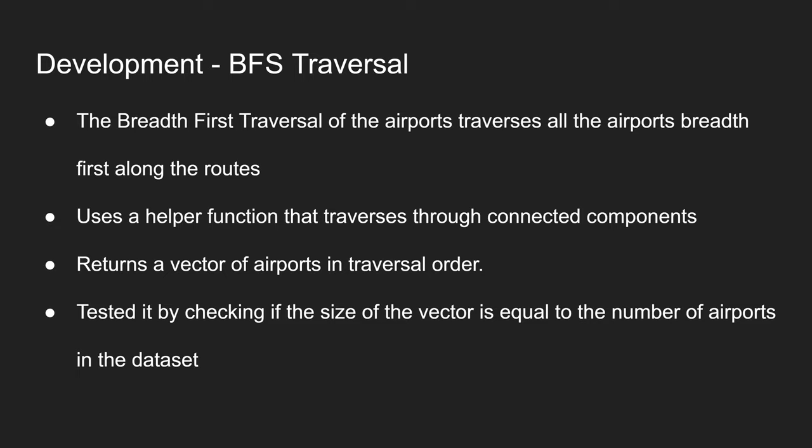The outer function that uses the helper function then iterates through all the other nodes that haven't been visited yet, to get all the connected components in the vector, and outputs the airports in that order. We tested this by checking if the size of the vector is equal to the number of airports in the dataset.